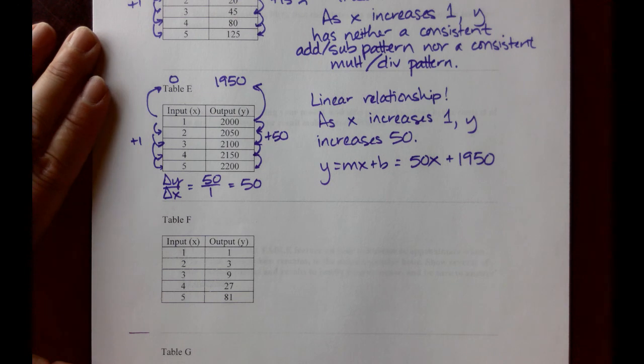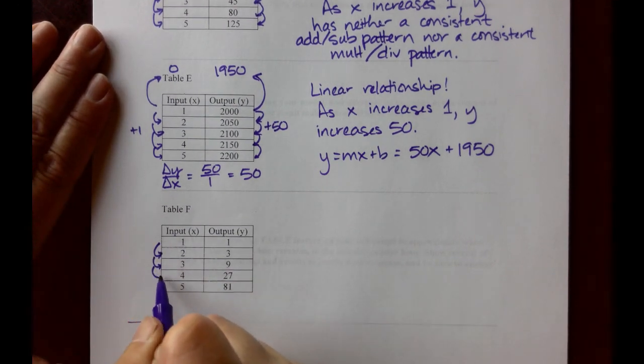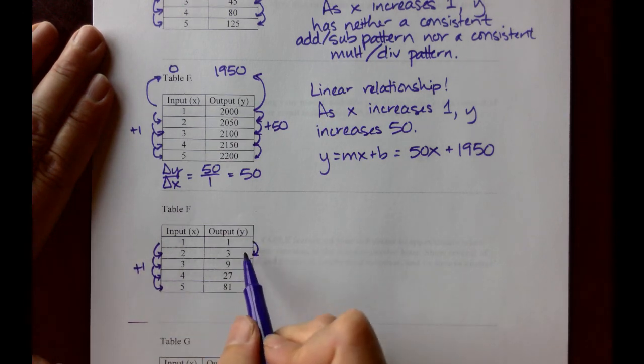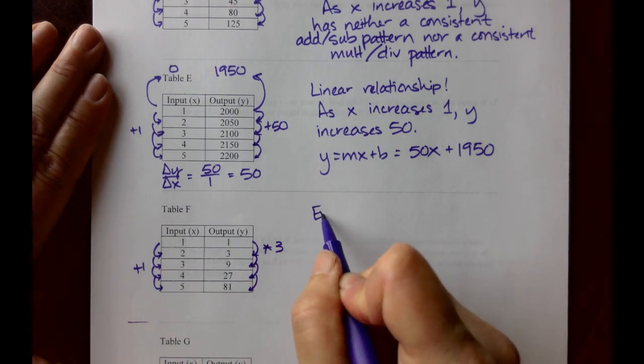Our last one together, table F, x's are increasing by 1, the y's go from 1 to 3, to 9, to 27, to 81. This will be multiplication by 3. That means we have an exponential relationship.